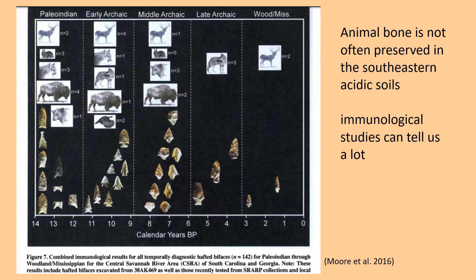This illustration shows at the bottom the actual stone tools that were tested, and at the top, pictures of the different animals whose antisera was found and the number of tools that had that residue on them, going from Paleo-Indian, Early Archaic, Middle Archaic, Late Archaic, and up into Woodland and Mississippian, for a number of sites in the Central Savannah River area. Animal bone itself is not often preserved in the acidic soils of the southeast, so it's only from immunological studies such as this that we can learn about the animals that were being hunted or processed.